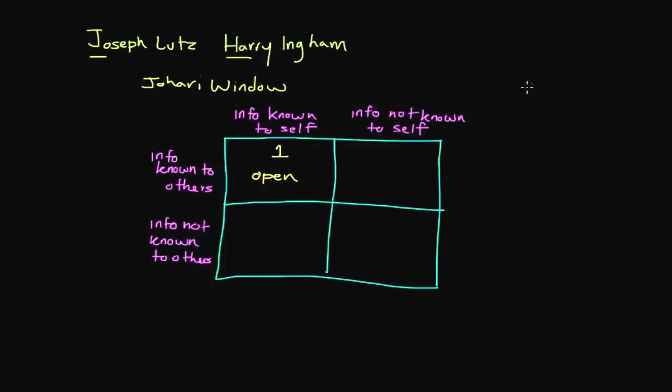In the second area, this is information that we don't know about ourselves, but others have an awareness of us. And this is the second kind of stage, if you will. And we refer to this as the blind area. And the blind area, as you know, is information we don't know about ourselves, but others know.